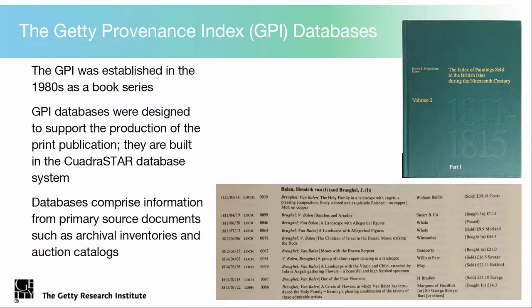As Josh mentioned, the GPI was established in the 1980s, and initially it was a book series to support provenance research — showing you an example here of volume three of the British Sales Index. The databases were built to fuel the production of the print publication and were built in the QuadraStar database system, which was created to serve the databasing needs of libraries, archives, and museums in particular.